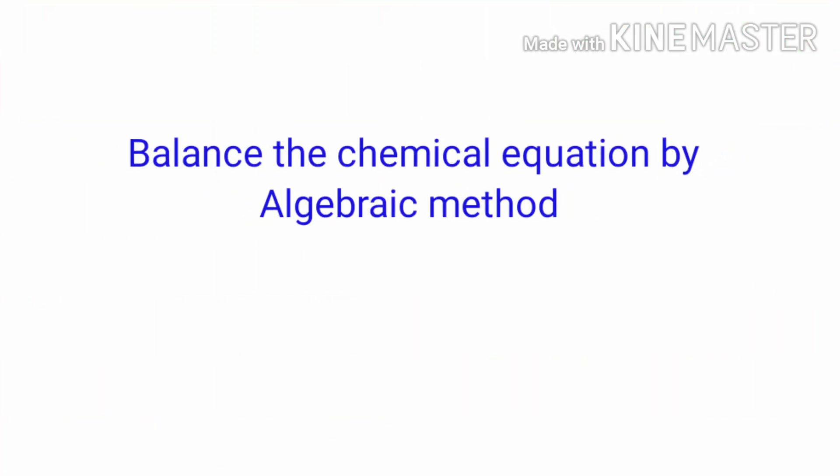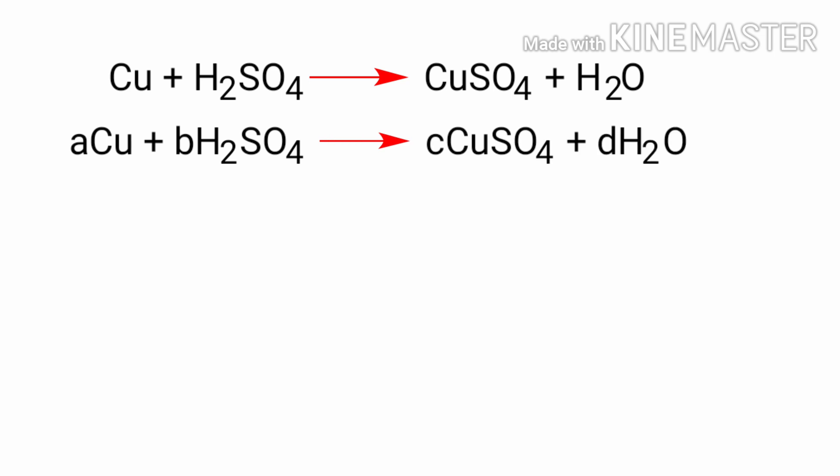Balance the chemical equation by algebraic method. Copper plus sulfuric acid gives copper sulfate plus water. First, we give each compound a letter coefficient: aCu plus bH₂SO₄ gives cCuSO₄ plus dH₂O.